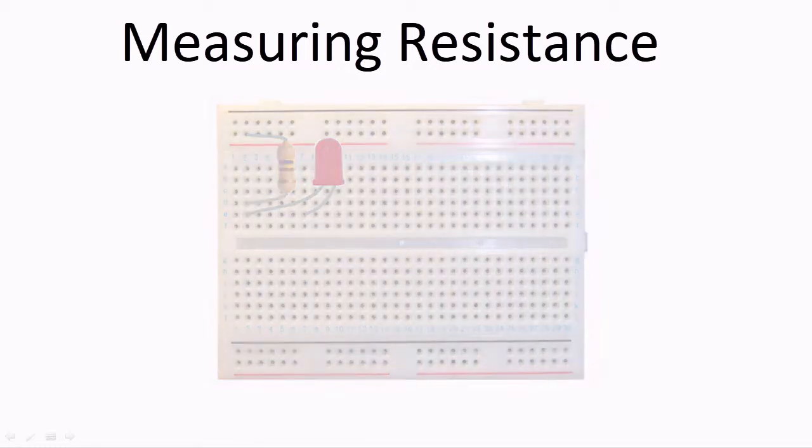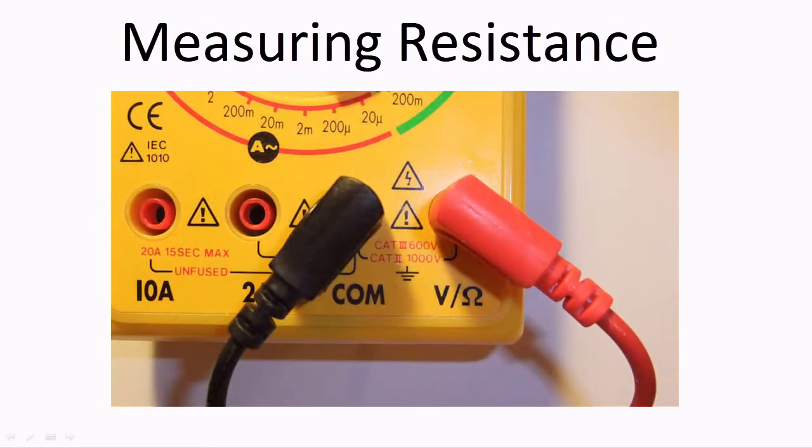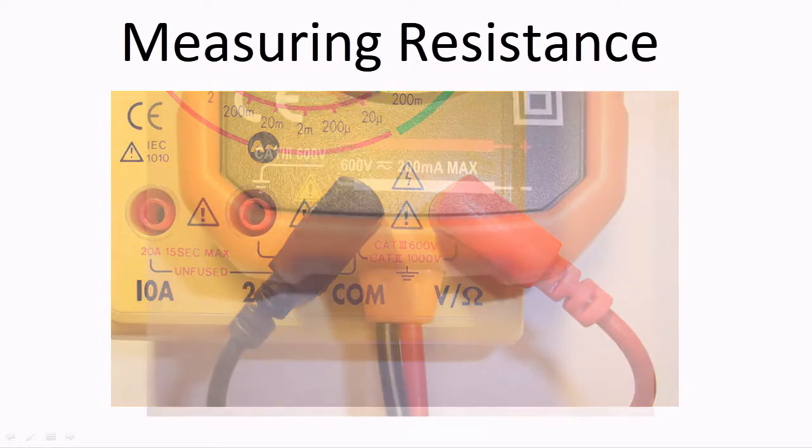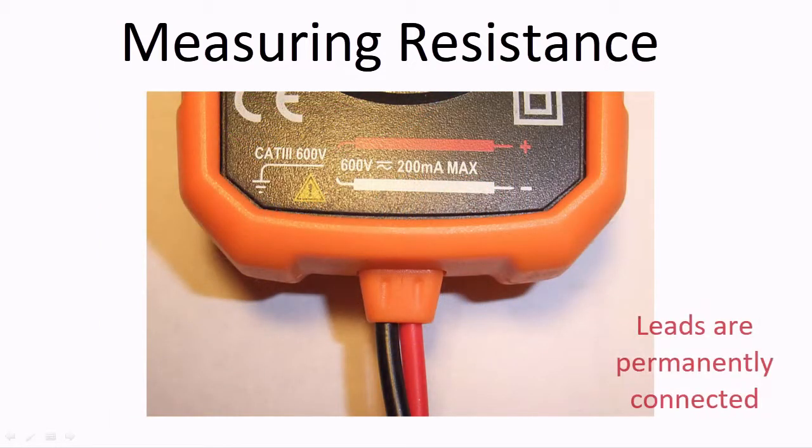For a non-auto-ranging meter, connect the black test lead to the COM jack, and the red test lead to the voltage/ohm jack. For an auto-ranging meter, the leads are permanently connected, so you don't need to do this.